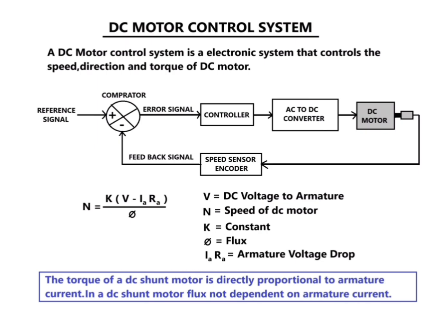The formula for speed is given here: V equals DC voltage to the armature, n equals speed of the DC motor, k is a constant, and π equals flux. Ia·Ra equals the armature voltage drop across the armature.